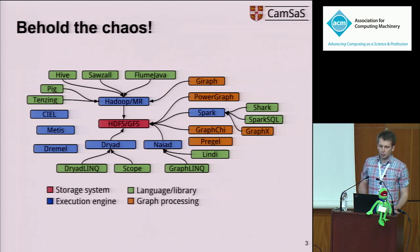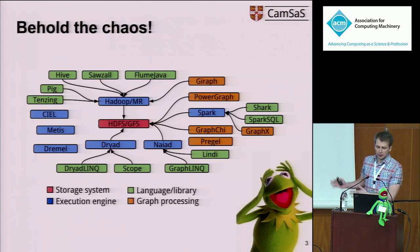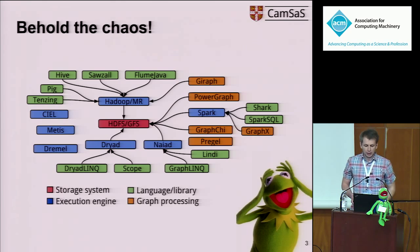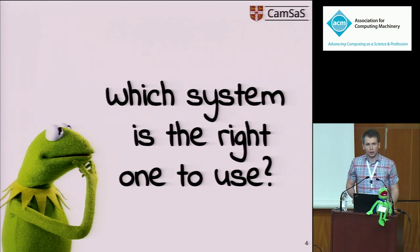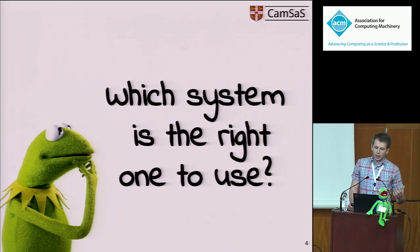But this is complete madness. I'm only showing a subset of the systems that exist and there are already too many. The question Kermit asks himself is which system is the right one to use. Luckily, Kermit is a pedantic guy and he decides to be scientific about the process, so he runs several experiments.